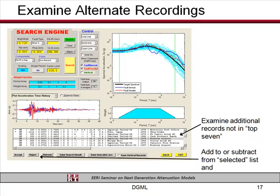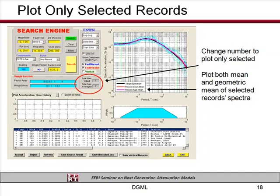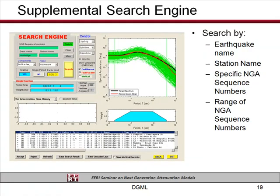You can then go through the process and say, I saw these seven but some I don't like — I want to see what else is available. So you just scroll down the list and look at other records, and you can add and subtract records from the selected set to get your final set of what you think are the best seven records for your application. As an example, once you've picked your seven records, you can plot the response spectra for those seven records and save the generated figures to files that can be pasted into reports.